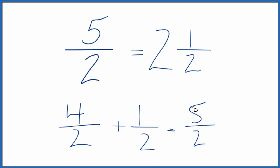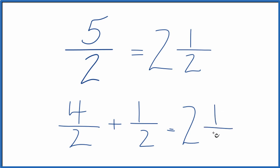But instead of 4 over 2, we could just divide 4 by 2. 4 divided by 2, that's 2. And then we just have the 1 half. So we'll put that here, 2 and 1 half. That's what we got before.